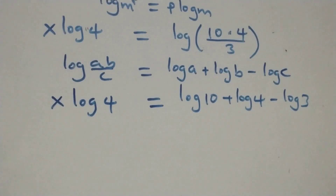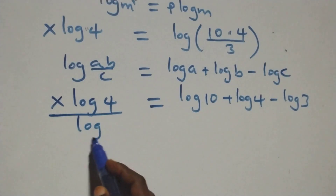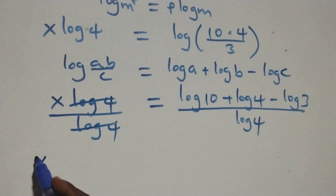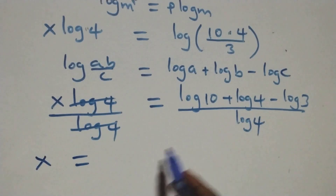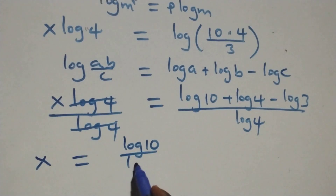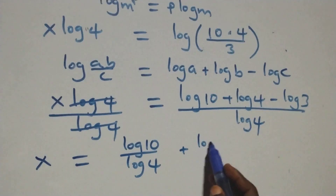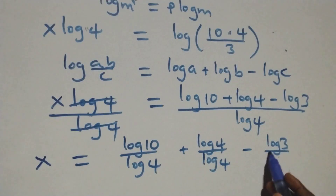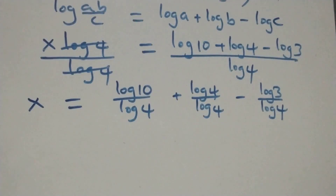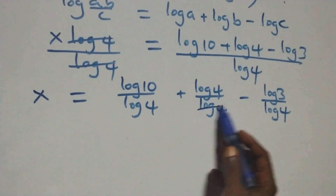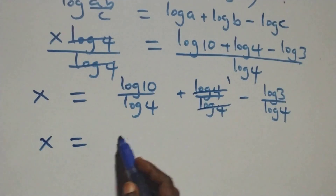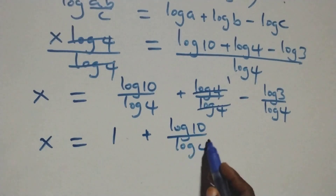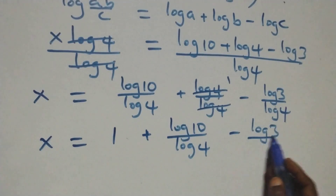Then here we divide both sides by log 4. That is, we divide this side by log 4 and also divide this side by log 4. Log 4 cancels each other and we have x equals — we separate this into three fractions — log 10 over log 4 plus log 4 over log 4 minus log 3 over log 4. Log 4 cancels each other leaving 1.